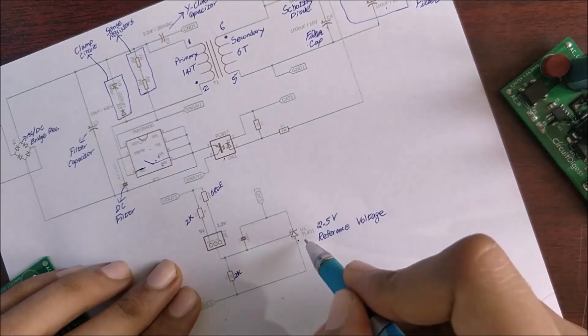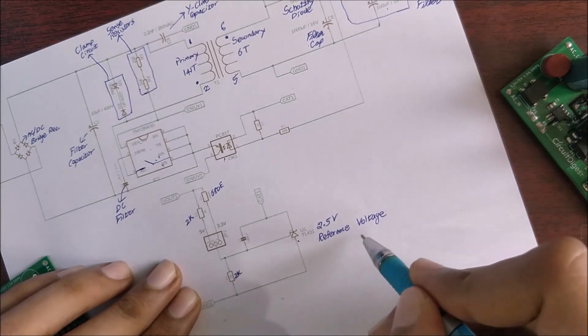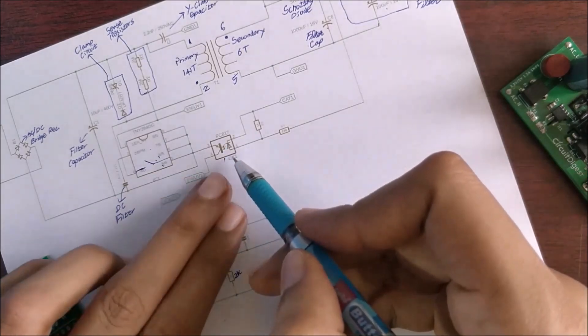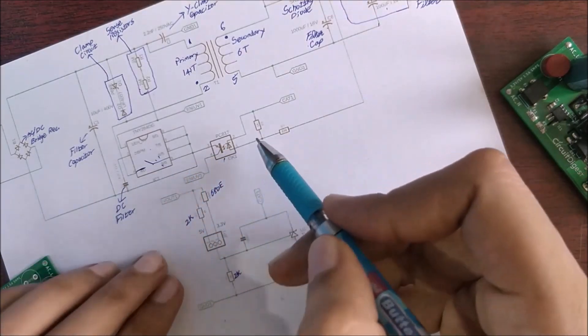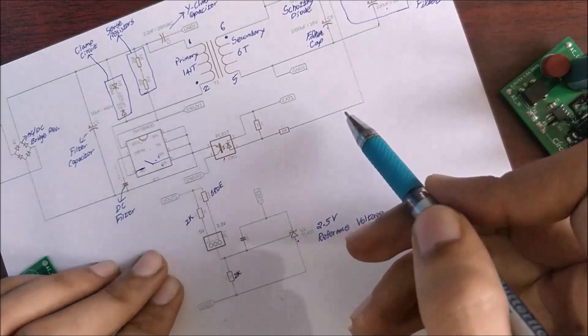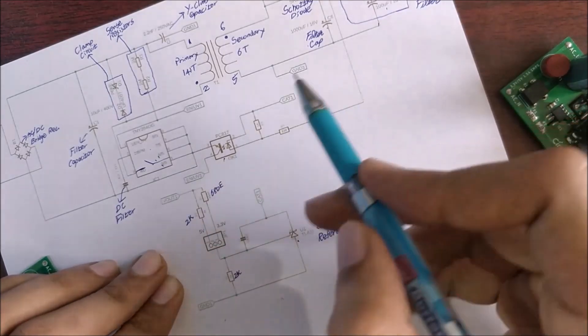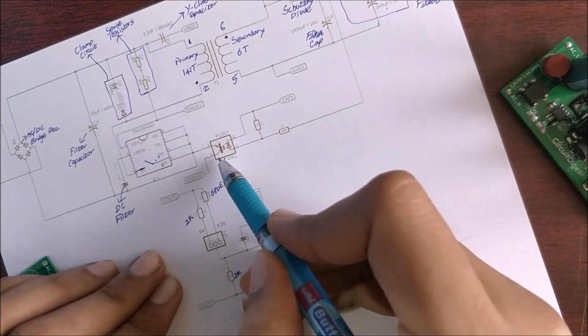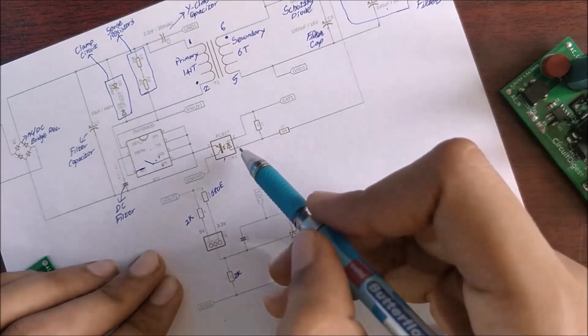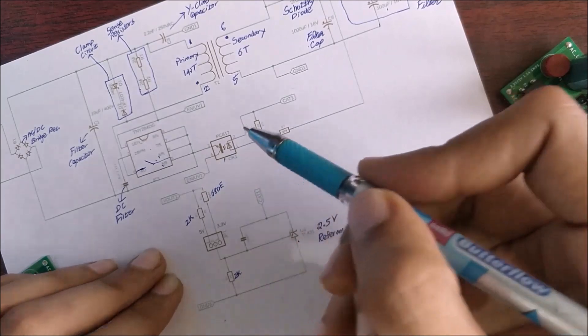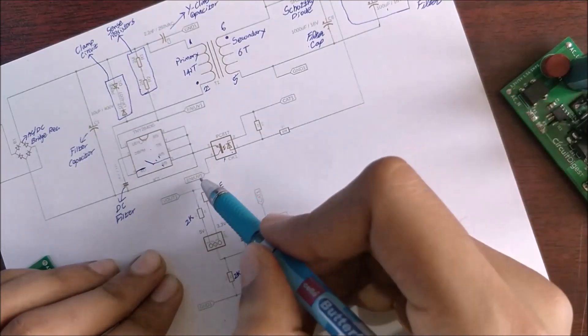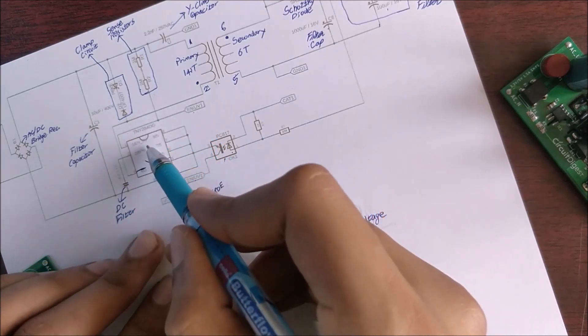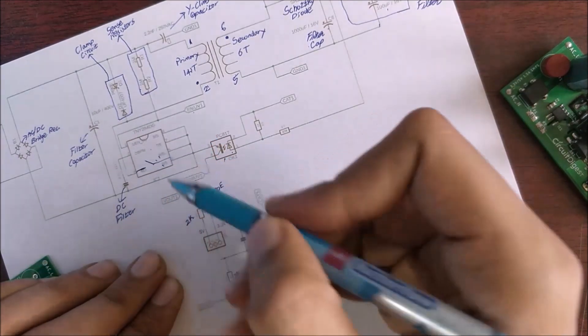One is the TL431 which is a reference voltage generator. It will generate 2.5 volts and another is an optocoupler which will act as an isolation between the primary side and the secondary side. An optocoupler normally has an LED and a phototransistor. By giving signal to this LED the transistor will close the path and this pin is connected over here telling this controller IC when to turn on and when to turn off.